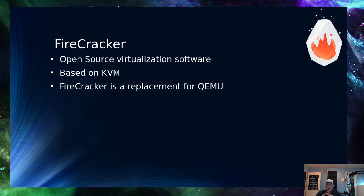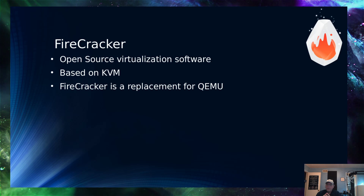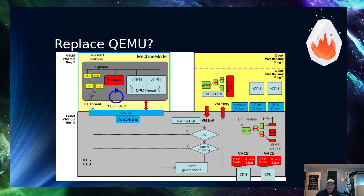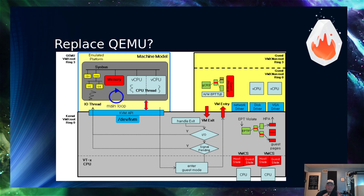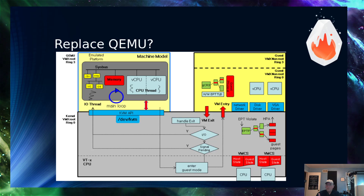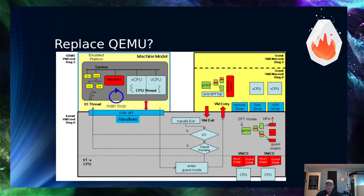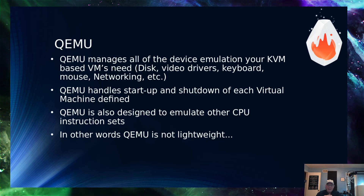That's what Firecracker was really designed to solve. It is open source virtualization software based on KVM. Firecracker is a replacement for QEMU. Now, QEMU — as you can see from the architecture drawing — provides all of the emulation for virtualized devices like CPUs, storage, network, and memory. It manages all this stuff. Why would you want to get rid of that? It also offers emulation for different CPUs. It manages all those devices — your disk, video, keyboard, mouse, networking, everything — and handles the startup and shutdown for virtual machines.